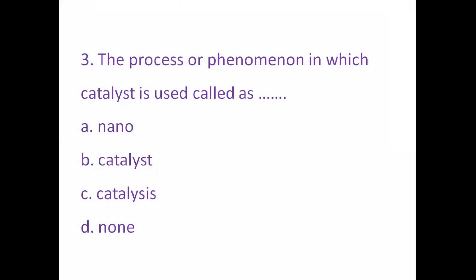The process or phenomenon in which catalyst is used is called: A) Nano, B) Catalyst, C) Catalysis, D) None of these. The right answer is C — catalysis. The process or phenomenon in which catalyst is used is called catalysis.